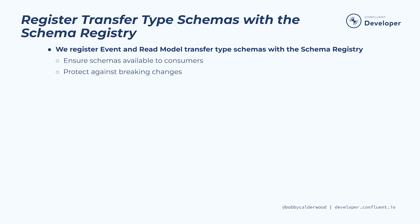The first touchpoint between the code we've already built and the streaming data platform is registering the transfer type schemas we defined to convey our events and read models with the Confluent schema registry. We don't need to worry about registering command transfer types in the schema registry, since commands are not published to Kafka. However, we will be publishing our events to the various stream topics, as well as publishing our read models to the compacted read model topics.